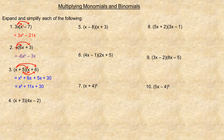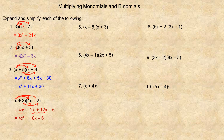In number 4, x times 4x is 4x squared, and x times negative 2 is minus 2x. Then 3 times 4x is 12x, and 3 times negative 2 is minus 6. The like terms in the middle are negative 2x and 12x, which add to 10x, giving the final answer 4x squared plus 10x minus 6.